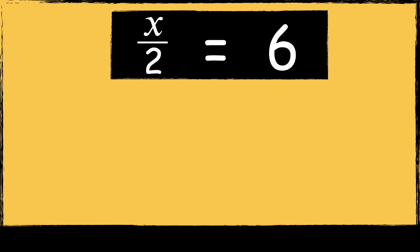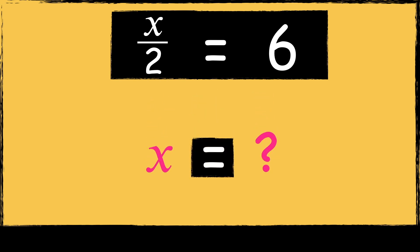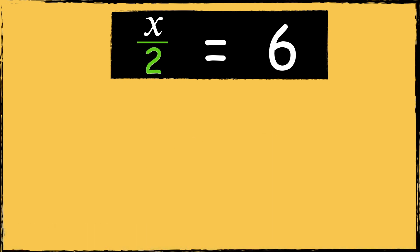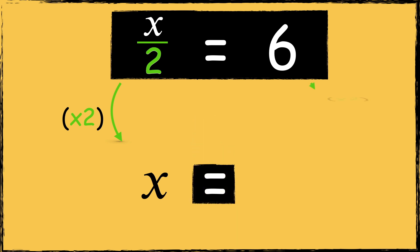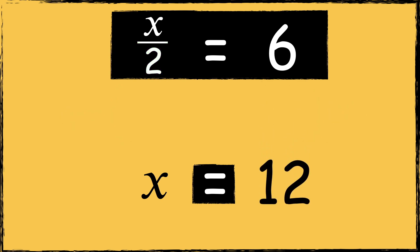Here's the next equation: X divided by 2 equals 6. To solve this equation we need to find the value of X. In algebra, division is normally represented using a fraction bar. First we can cancel the division by multiplying X by 2, so now I'm left with X. Anything that we do to the left side we must also do to the right side, so we need to multiply 6 by 2. 6 multiplied by 2 is 12, so the solution is X equals 12.